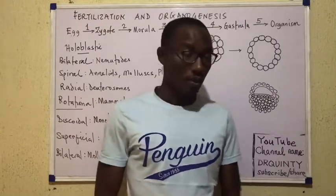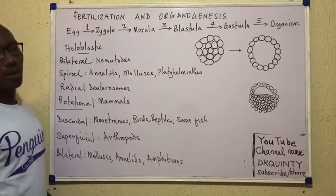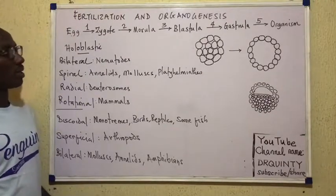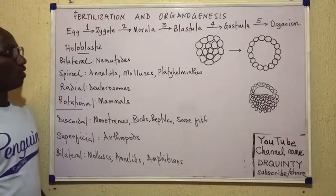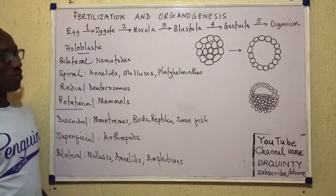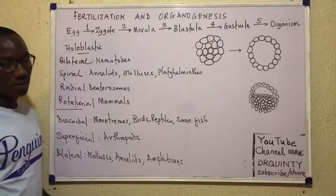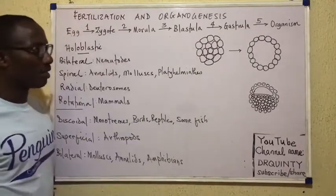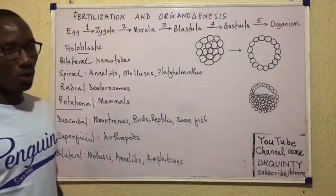Welcome back. In the previous video we saw how the egg becomes the zygote and then how the zygote becomes the morula via the process of cleavage. At the end of cleavage we have a morula which is generally regarded as the 16 cell stage. So one cell, the zygote, has divided several times to become 16 cells which we call the morula.